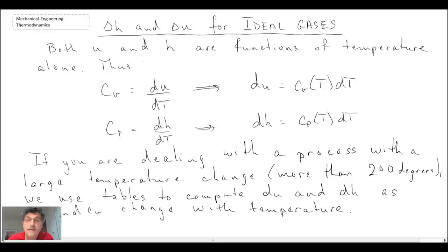So if the temperature change is more than 200 degrees for the process that we're looking at, you need to use the tables at the back of your textbook. If the problem that we're looking at has a smaller temperature differential, so if delta T is less than 200 degrees Celsius for example, then what we can write is the following approximation.